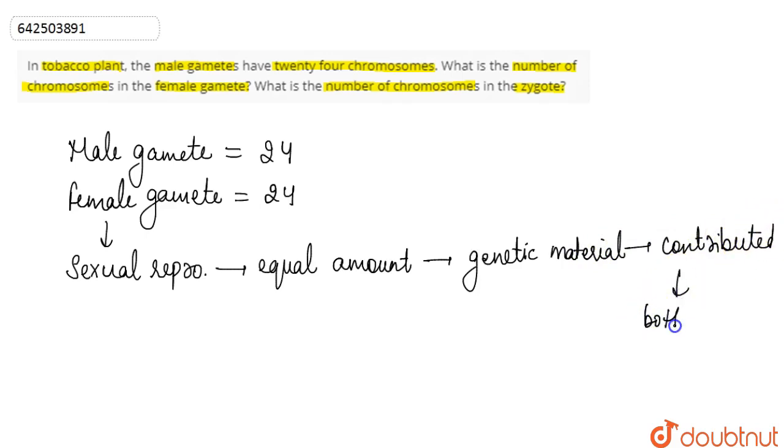So here, if the male is donating or is contributing 24 chromosomes in the male gamete, then the female gamete will also have the same number of chromosomes. As we know that the gametes...